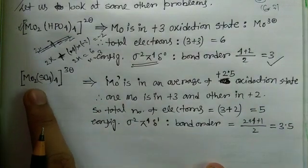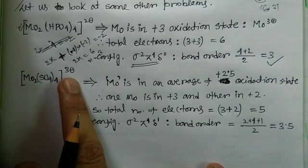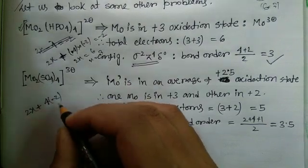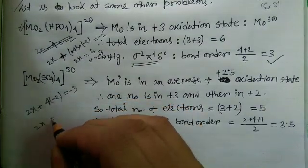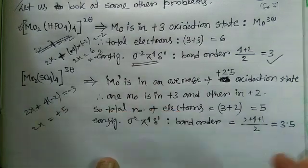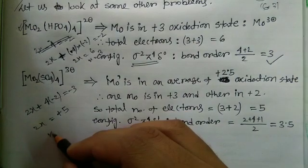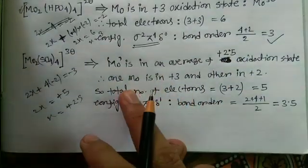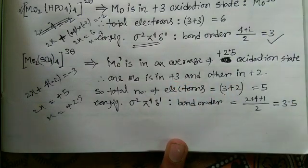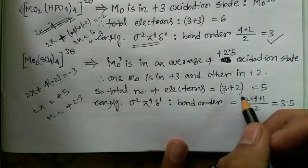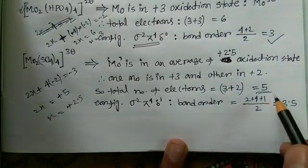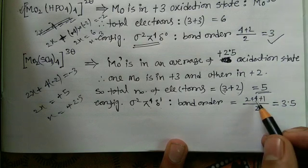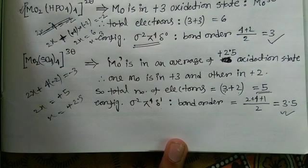Another molybdenum complex has sulfate ligands and a charge of −3. The oxidation state calculation gives: 2x + 4(−2) = −3, so 2x = 5, meaning x = +2.5 on average. We can consider one Mo in +3 and one in +2. The total number of electrons is 3 + 2 = 5, filled as σ²π⁴δ¹. Bond order = (2 + 4 + 1) / 2 = 7/2 = 3.5. So this complex has a bond order of 3.5.